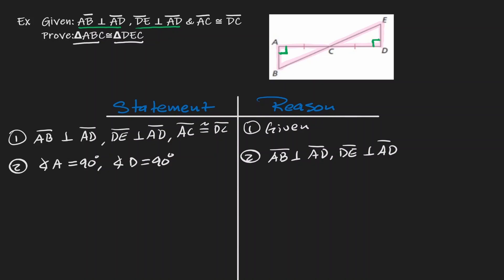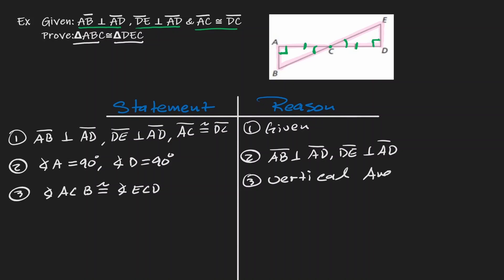What else do we know? We can also see that AC is congruent to CD — that's already stated as a given, so no need to re-state it. Now, let's pause for a second. What else might we notice within this diagram? I can see that there's an intersection, and at that intersection we have two types of angles — those are vertical angles. Vertical angles are congruent to each other, so let's list that: angle ACB is congruent to angle ECD, because they are vertical angles.